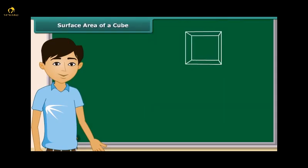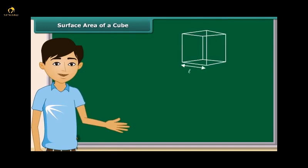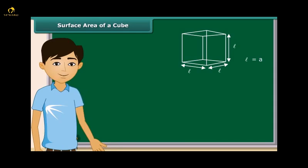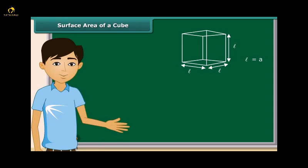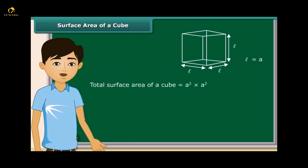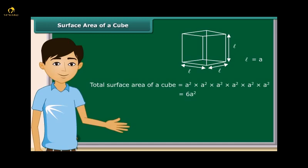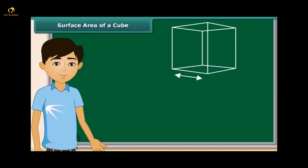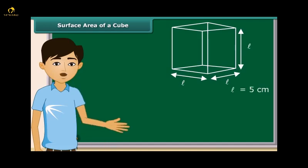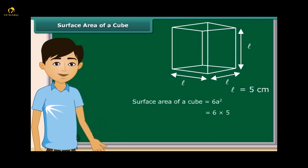Look at this cube. It is easy to see that the cube has 6 sides and each side is a square. Now to derive the formula of the surface area of a cube, let the length of one side be A. Since there are 6 sides, the total surface area is A square, six times, which is equal to 6A square. For example, a cube with each side equal to 5 cm has surface area 6 into 5 into 5, which equals 150 square cm.